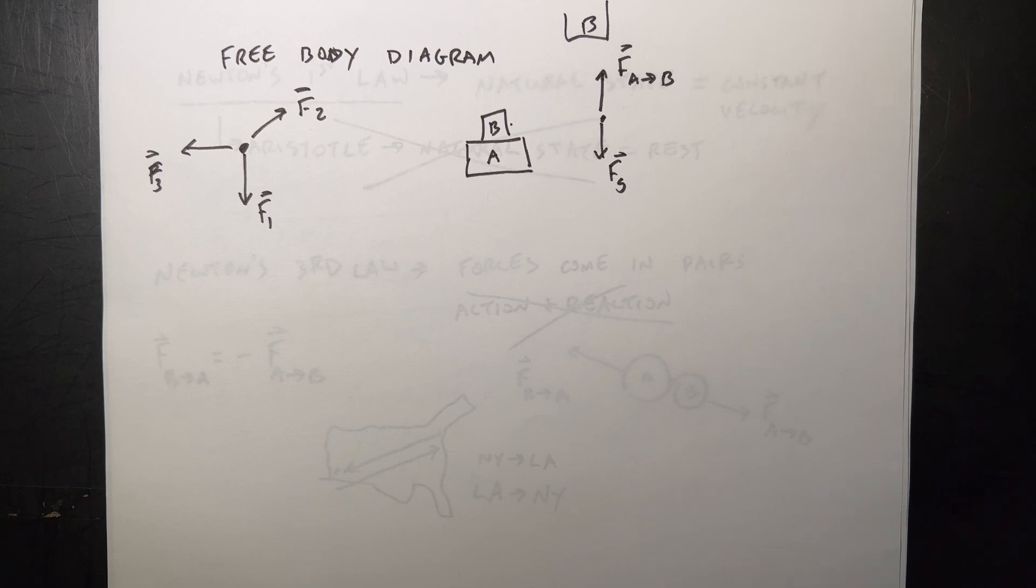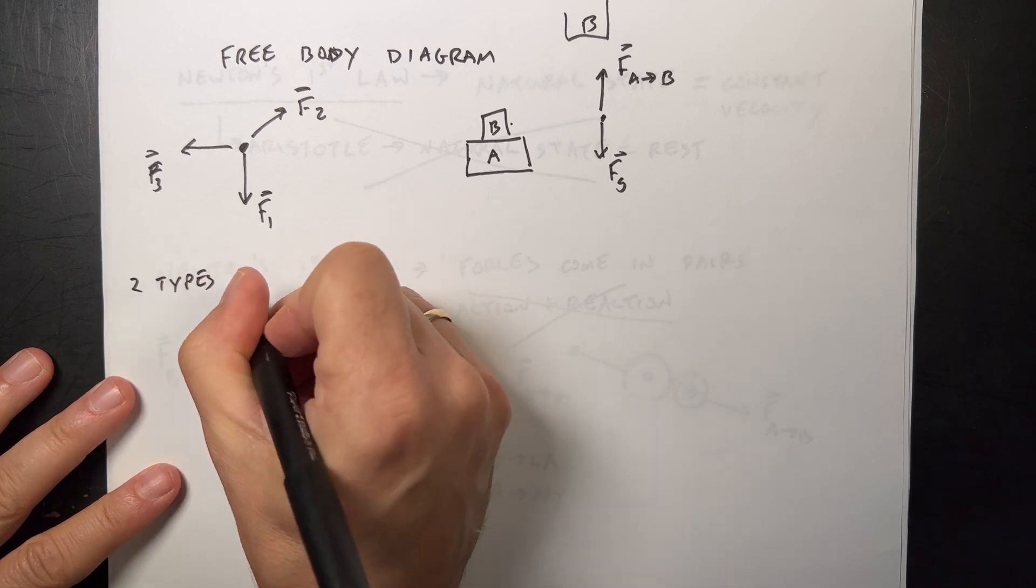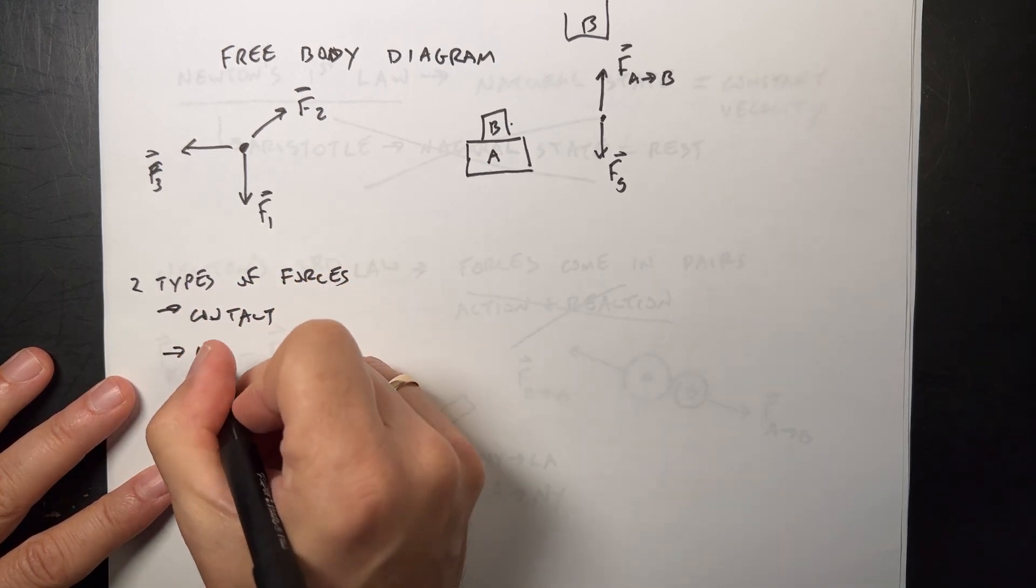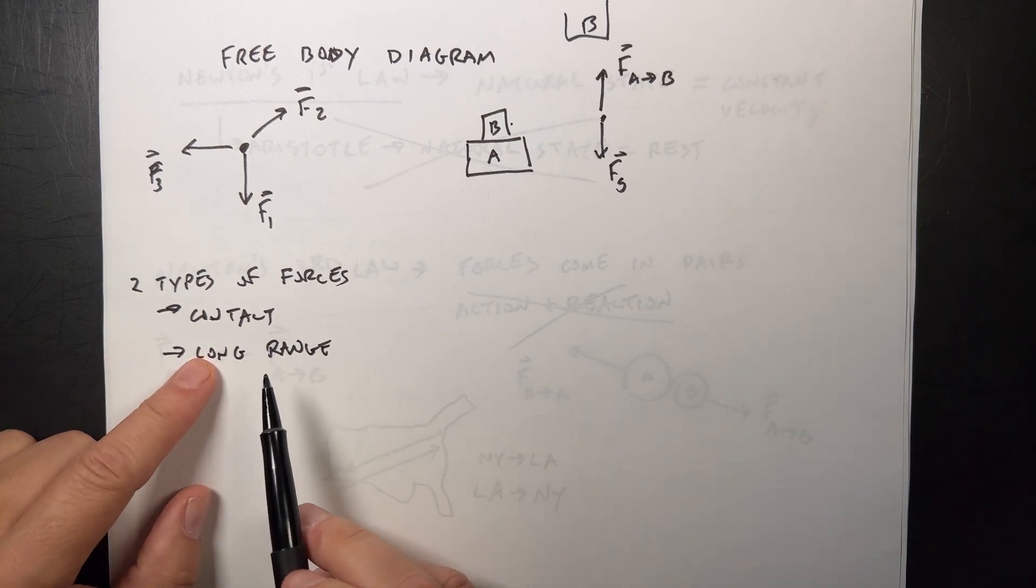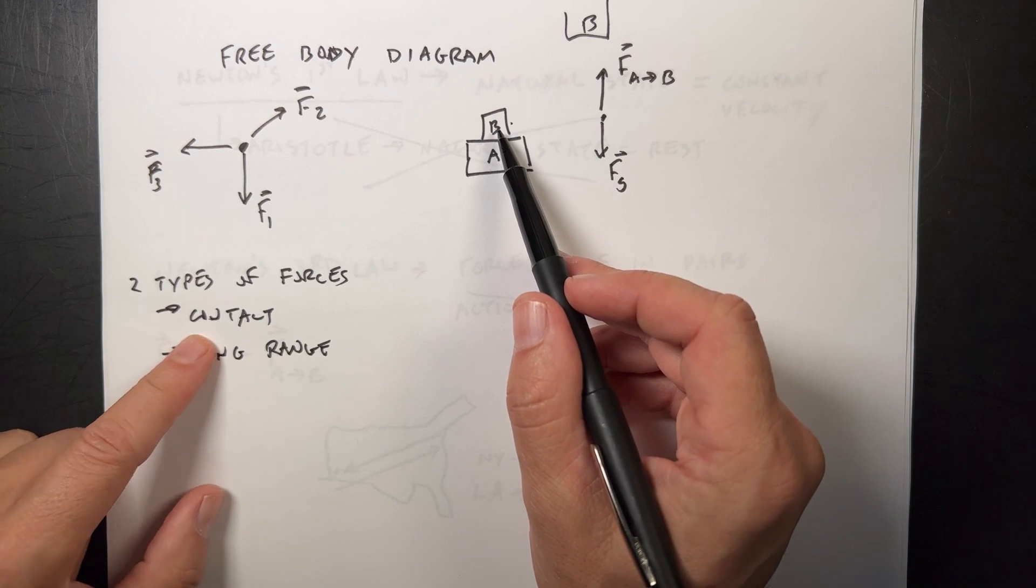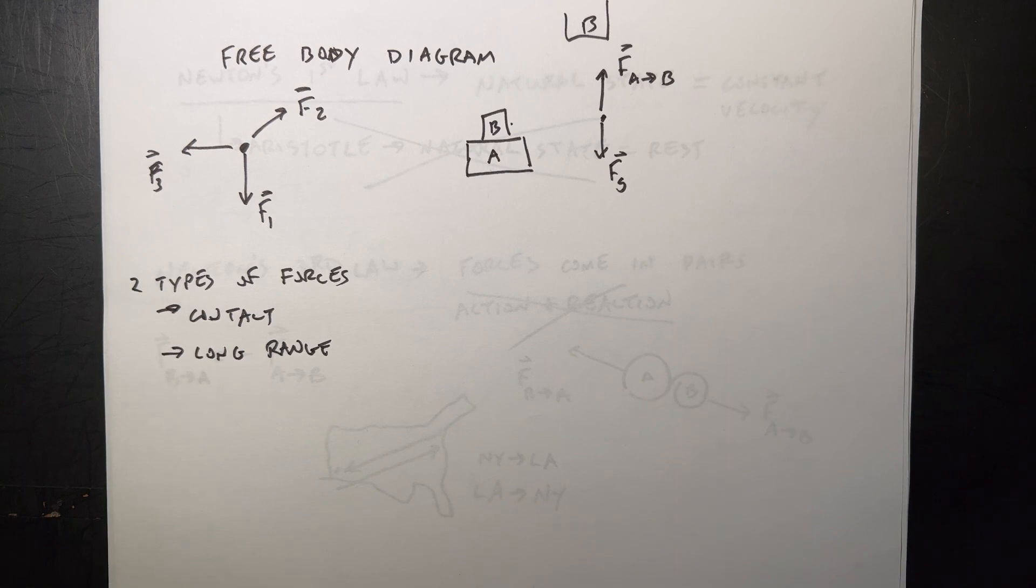One of the other things about free body diagrams - there are two types of forces: contact forces and long range. Probably the only long range force we're going to deal with is gravitational force. It's long range because it can exert a force - this is actually a force exerted on it due to the earth and they're not touching. The other forces we look at are contact forces. If it's not touching it and it's not a long range force, it shouldn't be there. A lot of people put like a ball's moving and say there's the force of the throw - there is no force of the throw.